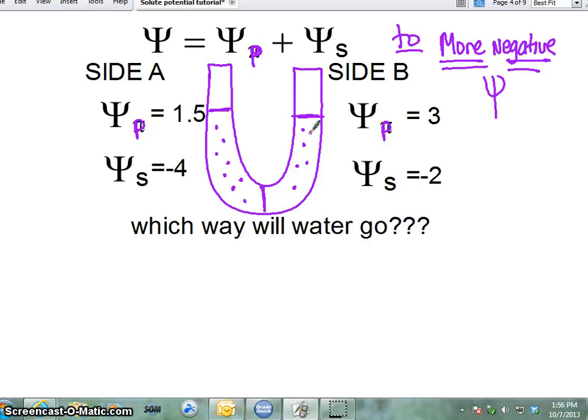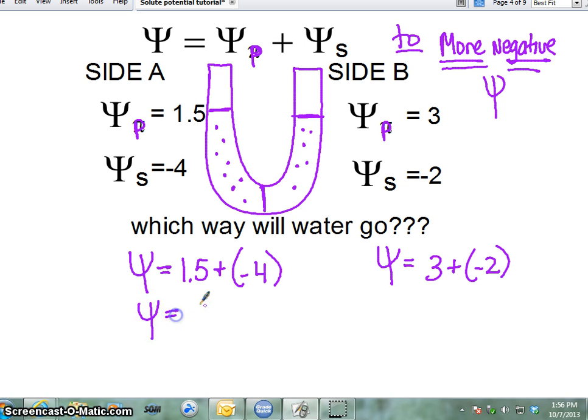So that may still be the case, but in order to see if water will still go to the left, we need to take a look at the pressure. So the way you would do this, really simple, you just plug in the numbers. So the water potential on the left side is going to be 1.5 plus negative 4. And my water potential on the right side is going to be 3 plus negative 2. So my water potential on the left is going to be negative 2.5. And my water potential on the right is going to be positive 1. If water always goes towards the more negative side, water will go to the left in this situation.